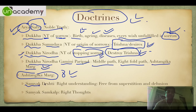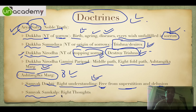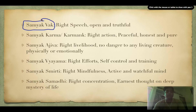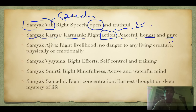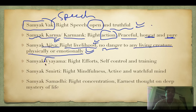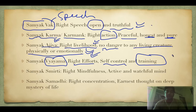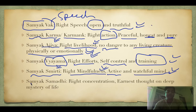Ashtangika Marg has eight elements. First: Samyak Drishti — right understanding, free from superstition and delusion. Second: Samyak Sankalpa — right thoughts, do not think evil of anyone. Third: Samyak Vak — right speech, open, honest, and truthful. Fourth: Samyak Karma — right action, peaceful, honest, and pure. Fifth: Samyak Ajiv — right livelihood, no danger to any living creature physically or emotionally. Sixth: Samyak Vyayam — right effort, self-control and training. Seventh: Samyak Smritti — right mindfulness, active and watchful mind. Eighth: Samyak Samadhi — right concentration, earnest thoughts on the deep mystery of life.